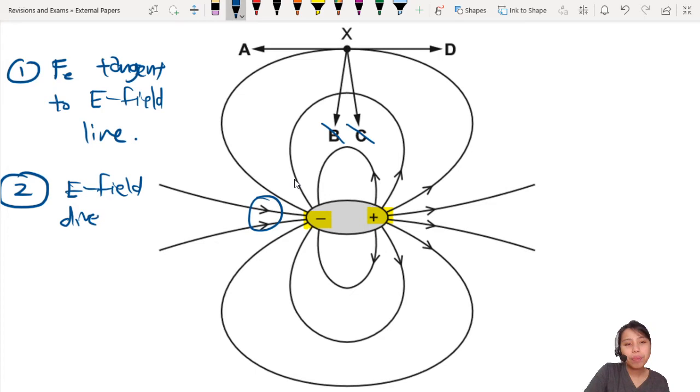Like these ones, that is showing where a positive test charge would go. So showing where a positive charge, a positive test charge will go.